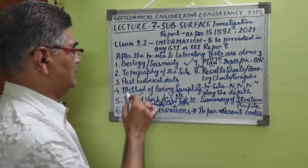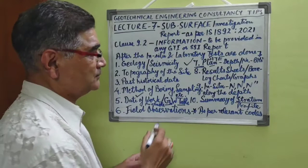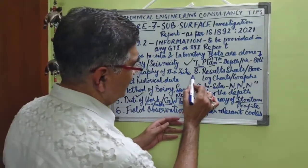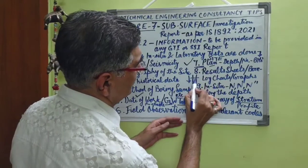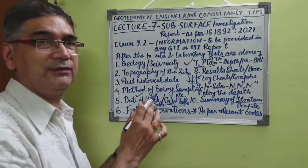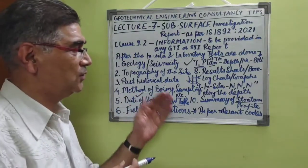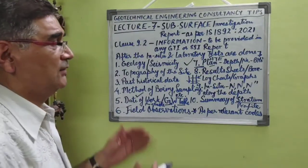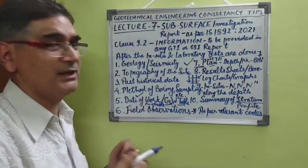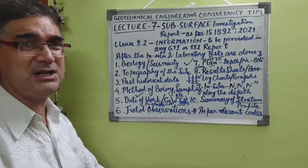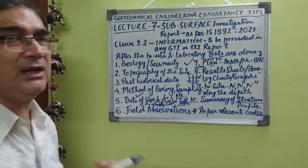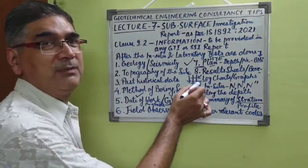After all these details are consolidated, comes the very important part: the result sheets. These comprise data plotted vertically along the depth axis, based on the sampling intervals. They should include cohesion, angle of internal friction, Cc value (compression index), whether it is sandy or clay soil, specific gravity, dry density, moisture content, bulk density, and likewise — as discussed in previous lectures. The report should also comprise borehole log charts and all relevant graphs of the tests performed.